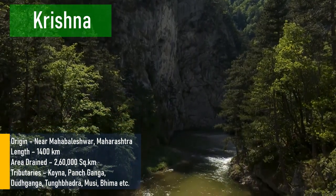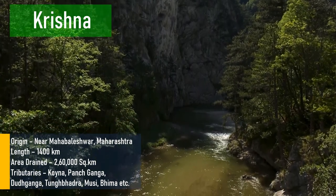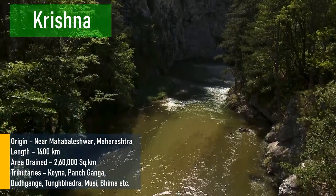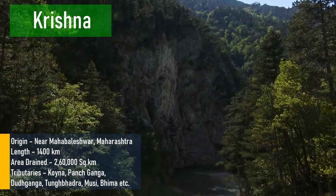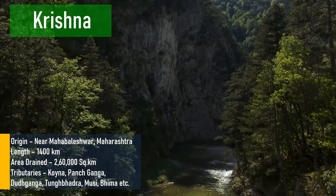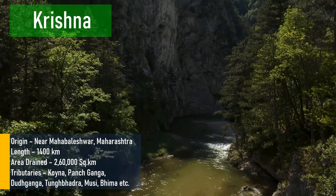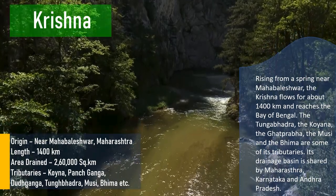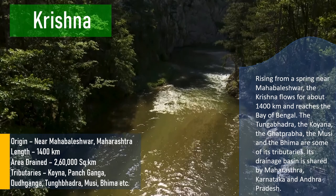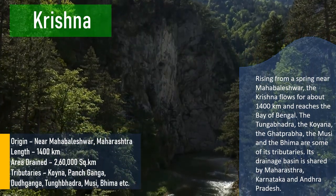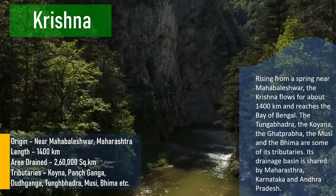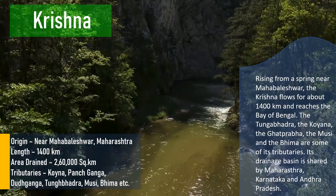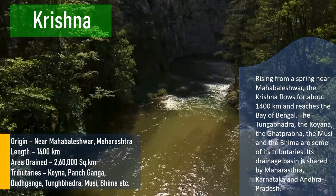The Krishna river originates from Mahabaleshwar, Maharashtra; its total length is 1,400 km; area drained is 2,60,000 sq km. Its tributaries are Koyna, Panchganga, Dudhganga, Tungabhadra, Musi, and Bhima. Rising from a spring near Mahabaleshwar, the Krishna flows for about 1,400 km and reaches the Bay of Bengal. The states covered by the Krishna river are Maharashtra, Karnataka, and Andhra Pradesh.